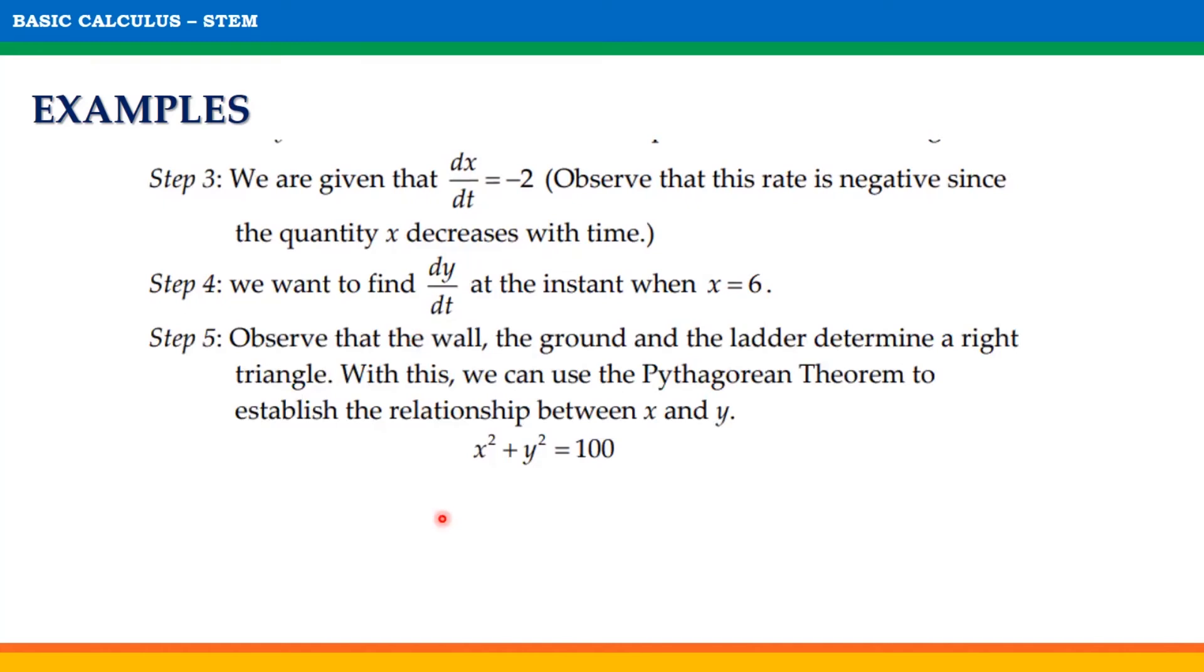Step 5: Observe that the wall, the ground, and the ladder determine a right triangle. With this, we can use the Pythagorean theorem to establish the relationship between x and y. That is, x² + y² = 100. We get 100 because the length of the ladder is 10, and 10 squared equals 100.